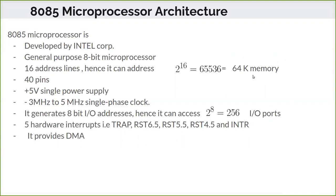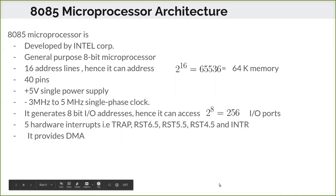It can individually address 64K memory. It has a 40-pin configuration, a power supply of +5 volts, and operates at a clock speed between 3 MHz and 5 MHz single-phase. It generates an 8-bit I/O address, so it can access 2 to the power of 8 — that is 256 individual I/O ports. It supports 5 hardware interrupts: TRAP, RST 6.5, RST 5.5, RST 4.5, and INTR. It also supports DMA.